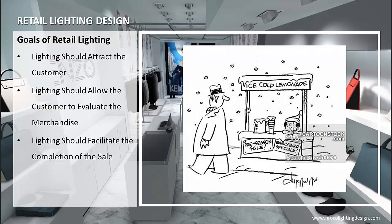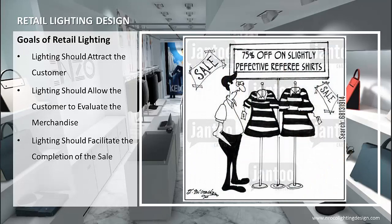Show windows and store interiors can draw customers toward merchandise or spaces where the selling process can begin. The second goal is lighting should allow the customer to evaluate the merchandise. The customer must be able to visually evaluate characteristics such as texture, color, and quality and to read labels. Fitting rooms as well as sales areas are important for merchandise evaluation.